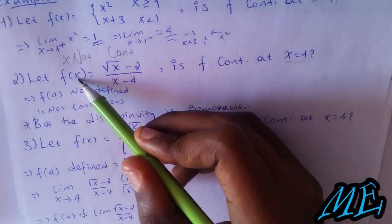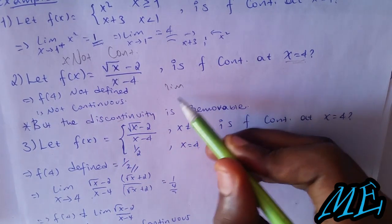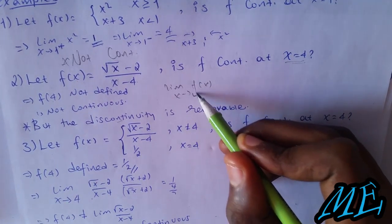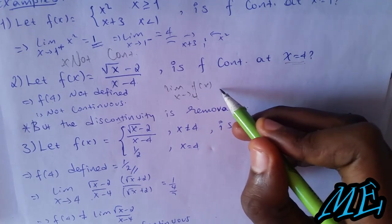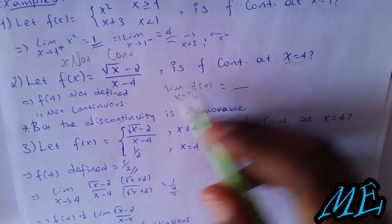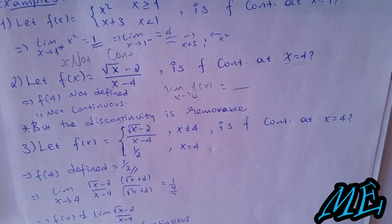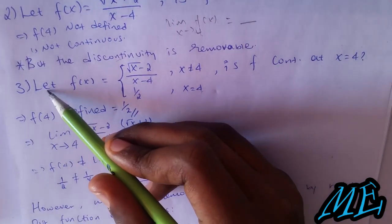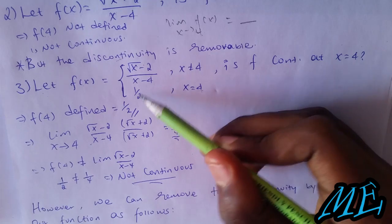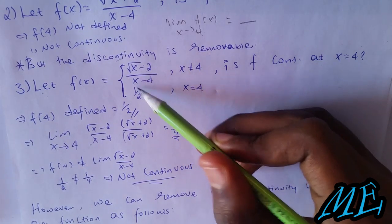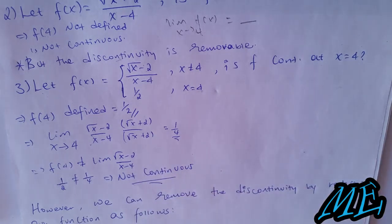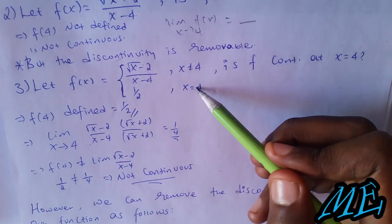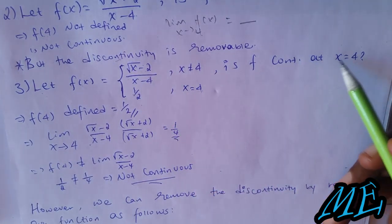If you want to remove the discontinuity, we define f(x) as: (√x - 2)/(x - 4) when x ≠ 4, and 1/2 when x = 4. Now we evaluate: f(4) is defined as 1/2.